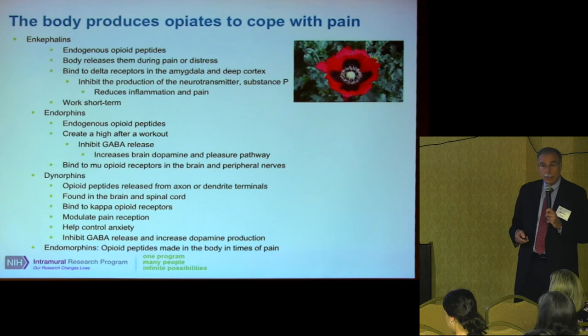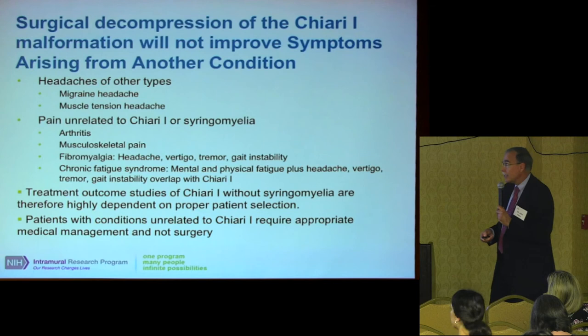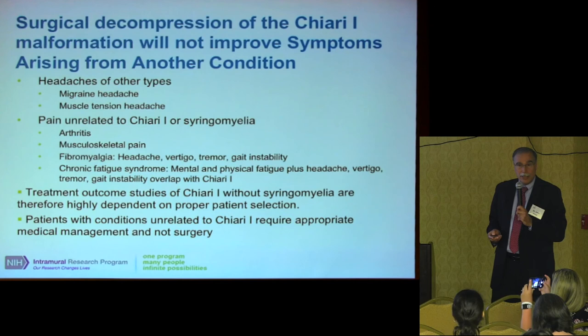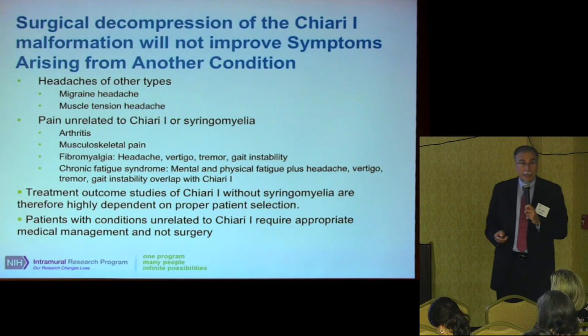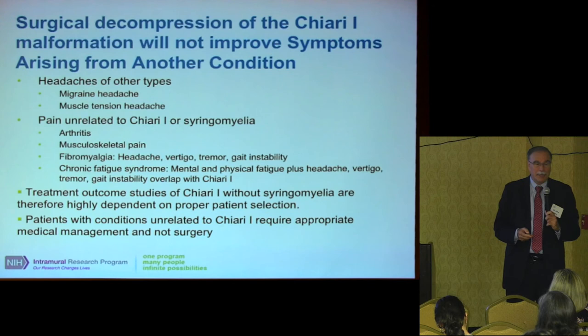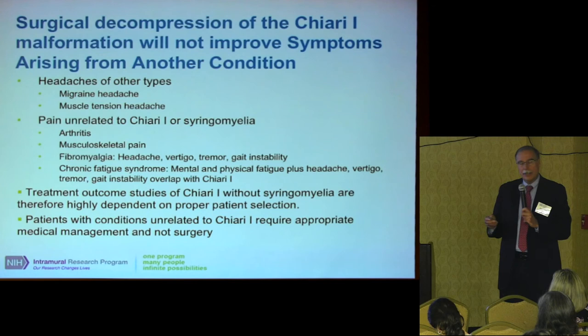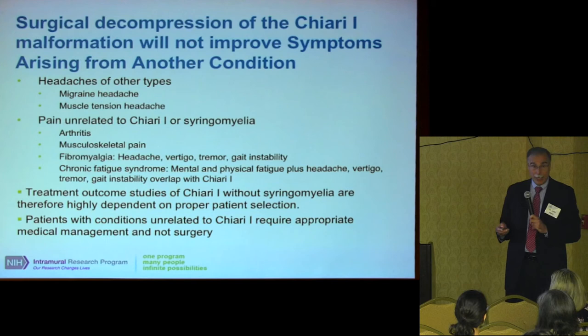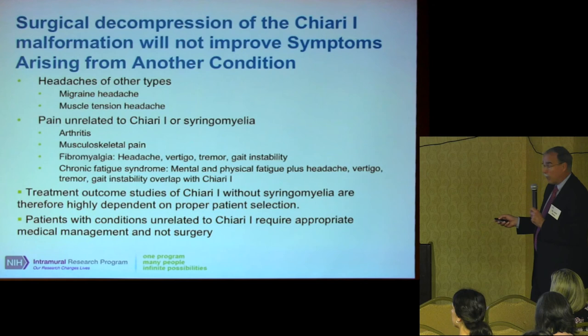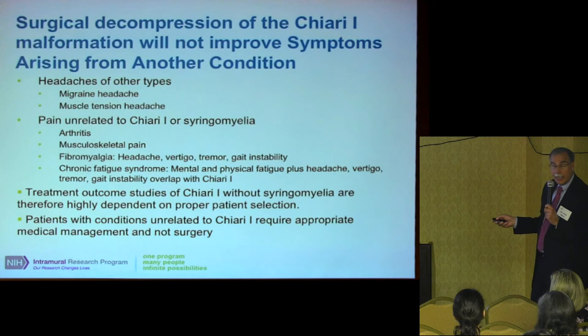Surgical decompression of Chiari 1 malformation won't improve symptoms arising from another condition. If you have migraine or muscle-tension headaches, surgery won't help those. Some people have both Chiari and migraine — if surgery eliminates the Chiari headaches and you're left with migraine headaches treatable with migraine medication, those patients can be very happy. Pain unrelated to Chiari or syringomyelia — arthritis, musculoskeletal pain — probably won't be fully relieved by surgery.